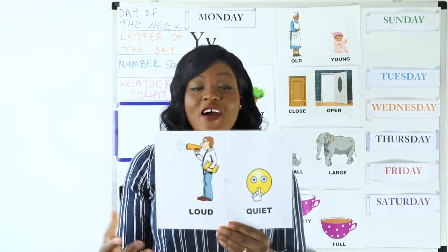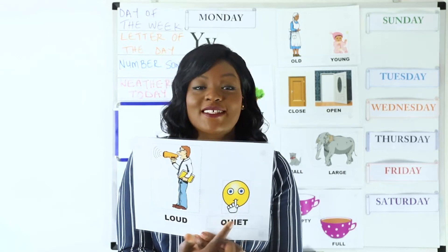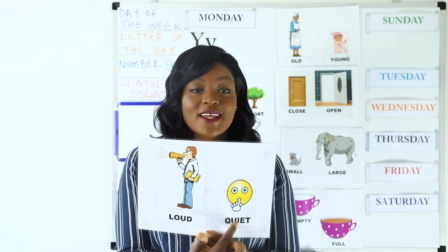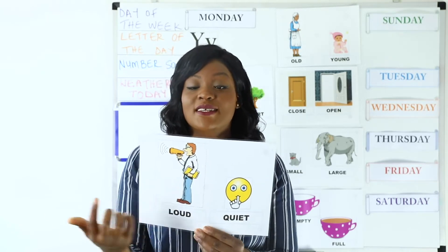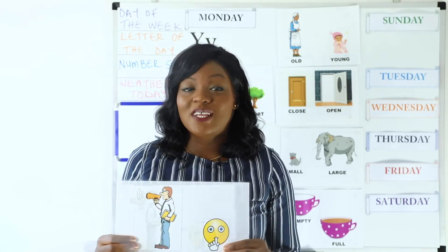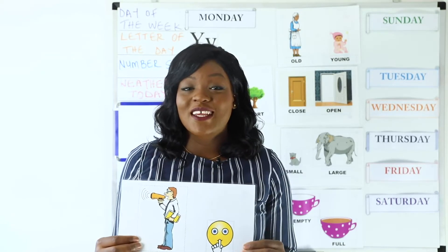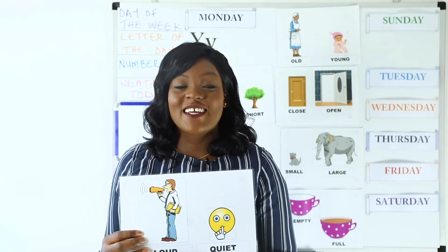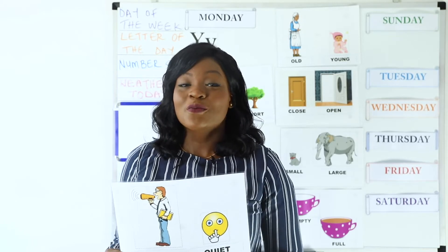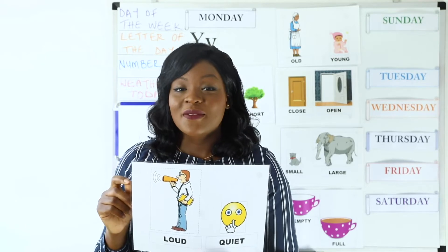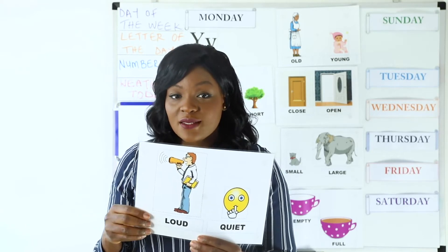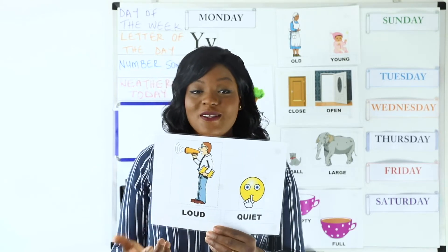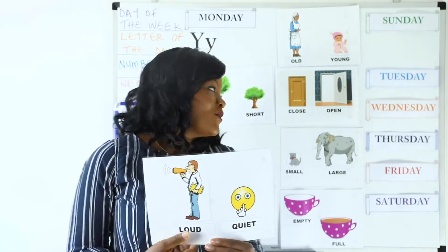Now we have loud and quiet. The opposite of loud is quiet. So I need you to scream your name loudly. Well done. Now I need you to whisper your name quietly. I'm going to whisper my name quietly — Mrs. Mo. Can you whisper your name too? Good job everyone. The opposite of loud is quiet.